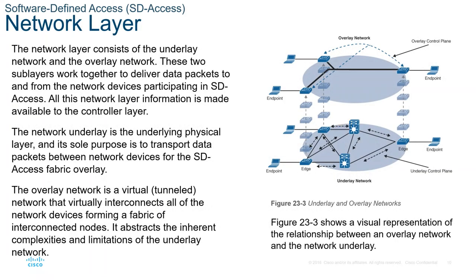The network layer consists of an underlay network and an overlay network. These two sublayers work together to deliver data packets to and from the network devices participating in SD-Access. The network underlay is the underlying physical layer whose sole purpose is to transport data packets between network devices for the SD-Access fabric overlay. The overlay network is a virtual tunneled network that virtually interconnects all network devices, forming a fabric of interconnected nodes, abstracting the complexities and limitations of the underlay.